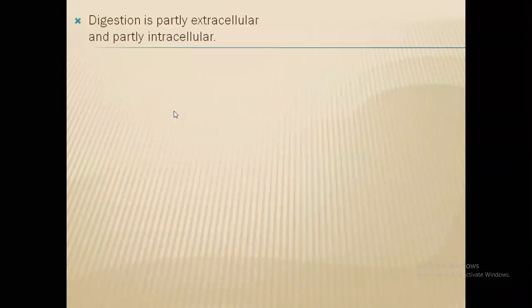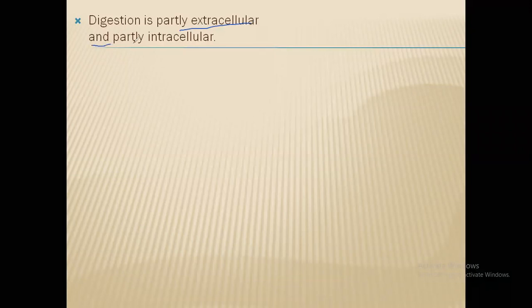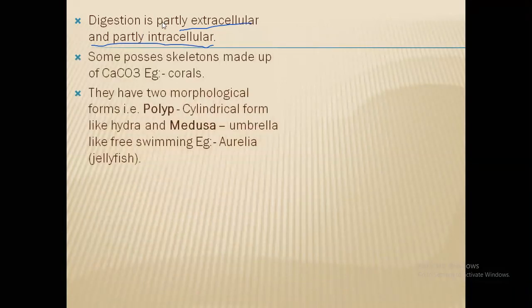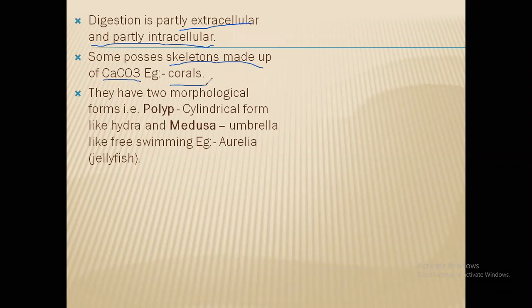Regarding their properties: they can carry out digestion extracellularly, meaning outside the cell in the coelenteron, or intracellularly, where the cells lining the gastrovascular cavity themselves carry out digestion within them. Some possess a skeleton made up of calcium carbonate — for example, corals. Corals have a hard outer covering made of calcium carbonate, though it is not technically bone — it is calcium carbonate.